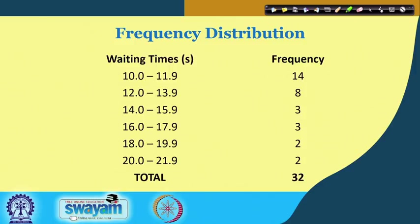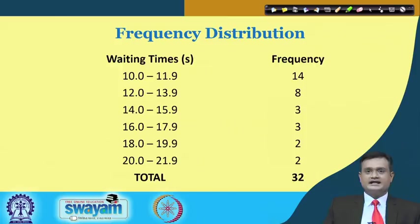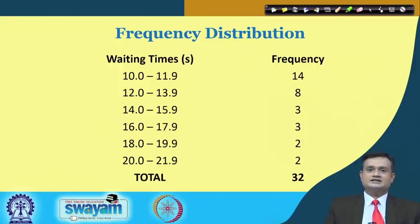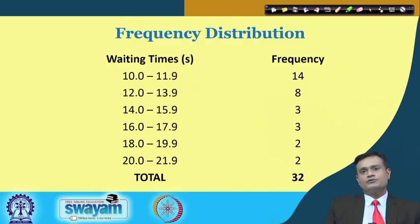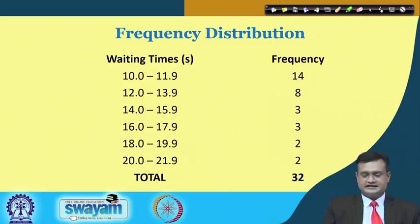In a waiting time example divided into 6 classes, the frequency for 10 to 11.9 is 14, for 12 to 13.9 it is 8, and for 14 to 15.9 it is 3. This helps understand the overall waiting time distribution in your organization's service counter and take corrective measures to improve service time or reduce waiting time.